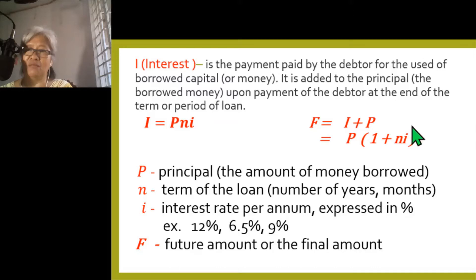F is the amount that the money borrowed will have to pay at the end of the term. Solving it algebraically and substituting I as P times N times I, we arrive at the formula: F is equal to P times the quantity (1 plus N times I).